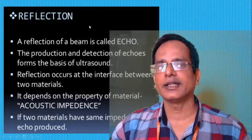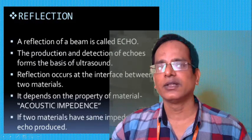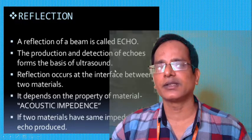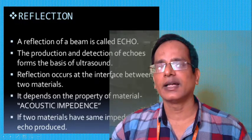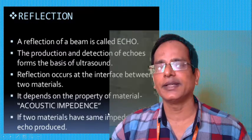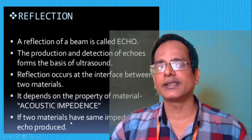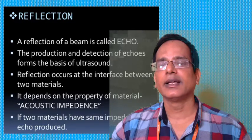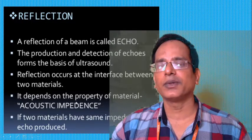Reflection: the reflection of a beam is called echoes, and the production and detection of echoes form the basis of ultrasound. Reflection occurs at the interface between two materials and depends on a property called acoustic impedance. If the two materials have the same impedance, no echoes are produced.